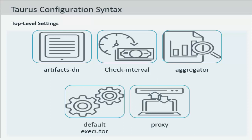Once you understand the basic Taurus configuration syntax and the top-level keys, here is a list of the key top-level settings that can be helpful to execute the script without any errors. The artifacts directory is a path template to save all the artifact files. The check interval is the polling interval used by the engine after startup and until shutdown to determine if the test needs to be stopped. The aggregator module is an alias for the top-level results aggregator used for collecting results and passing them to the reporters.